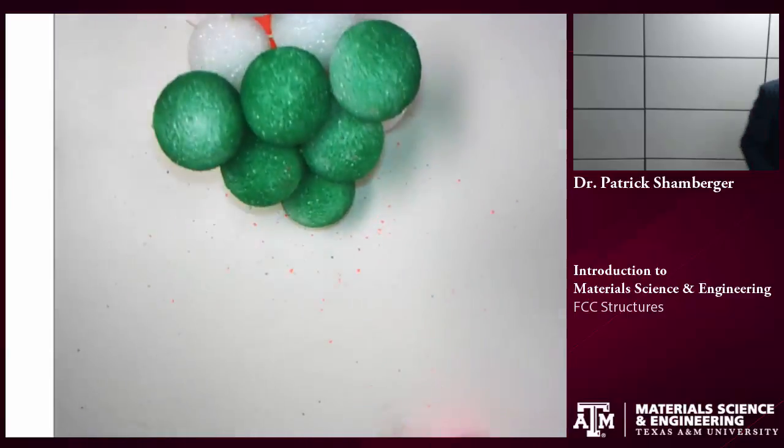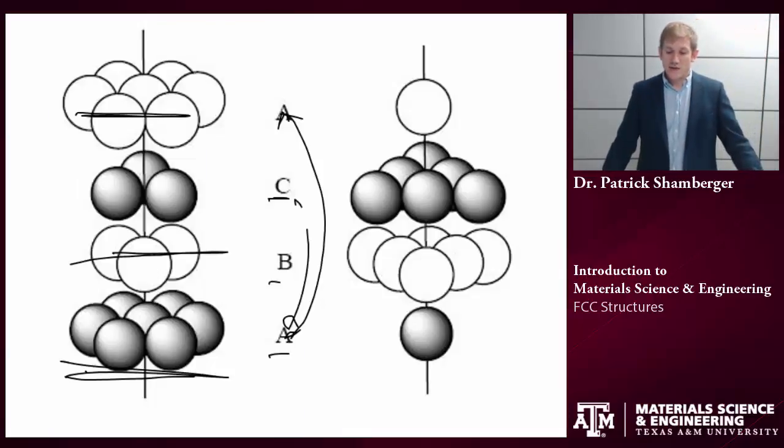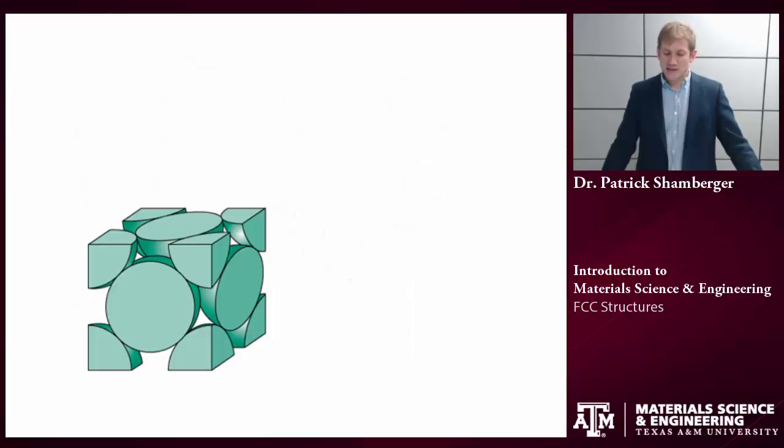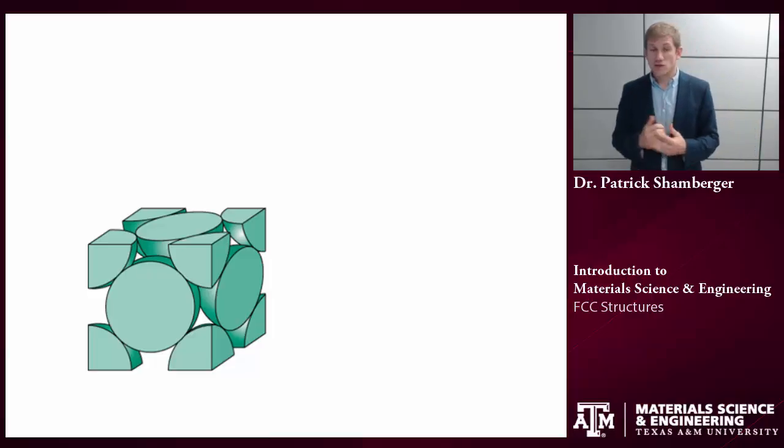So that is how we get the A, B, C, A, B, C type stacking and how we end up with the FCC plane. We're going to talk about a couple other things: coordination numbers and what some of the planes look like in the FCC structure.